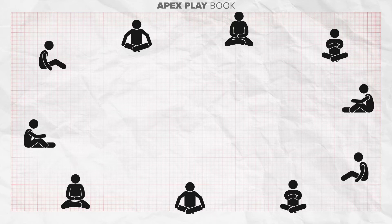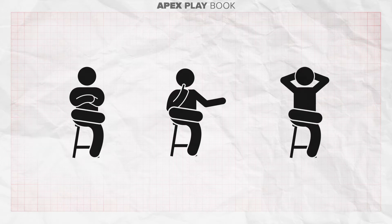This is a fun improvisation game for three people at a time. Seat the group in a wide open circle. Place three seats in a well-spaced triangle within the circle and have three people sit in the chairs.